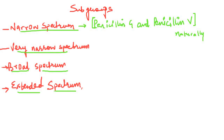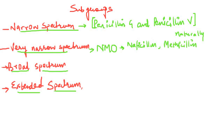We'll talk about the spectrum in a separate chart. The very narrow spectrum penicillins contain nafcillin, methicillin, and oxacillin. You can remember these by the mnemonic NMO — nafcillin, methicillin, and oxacillin.